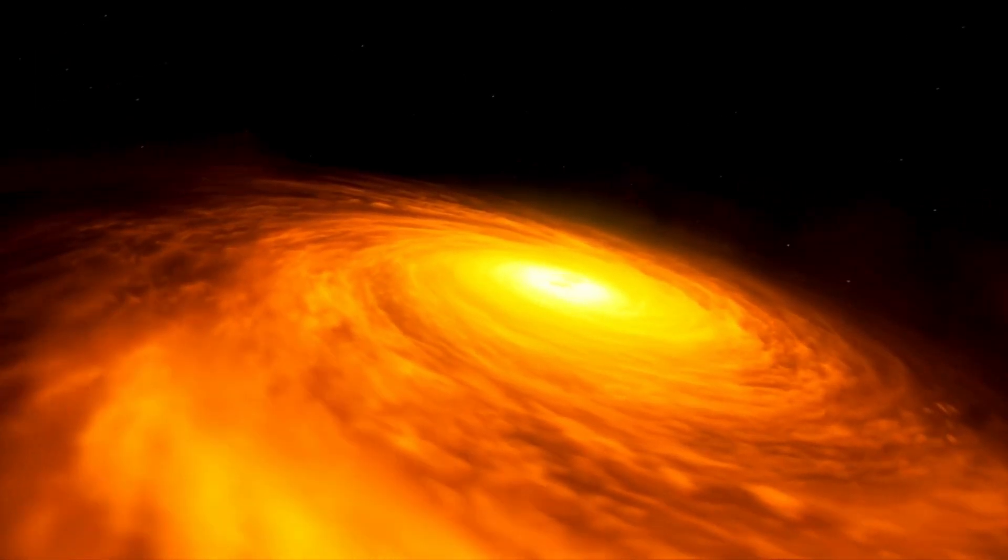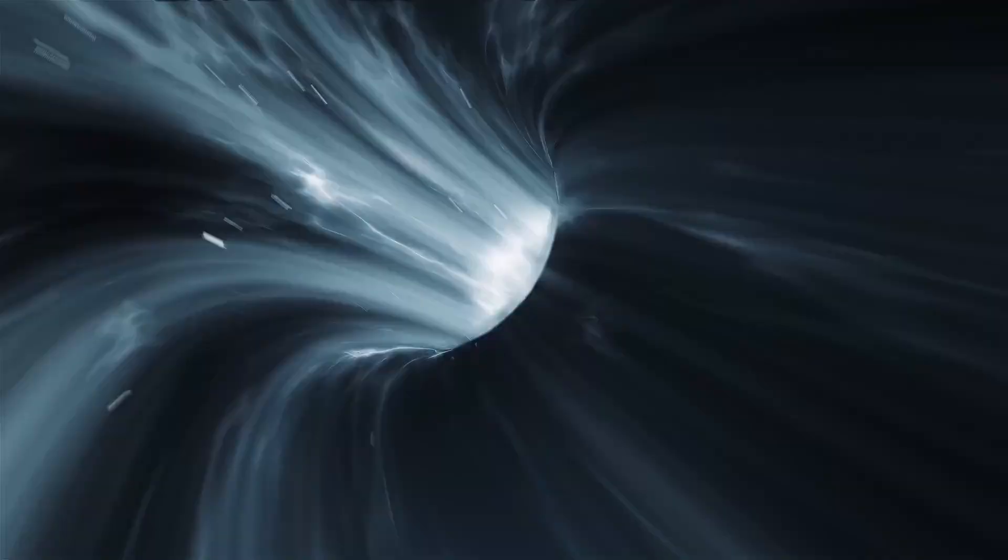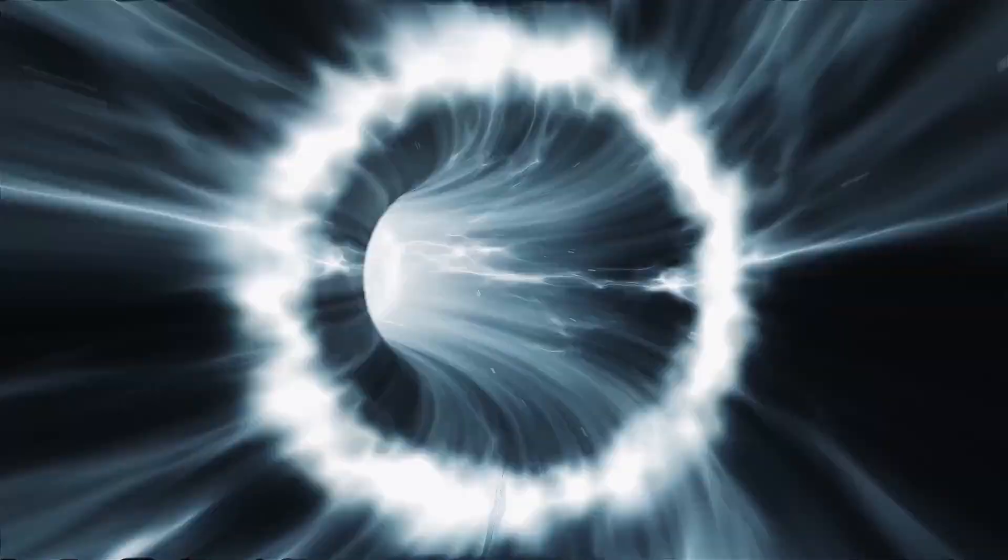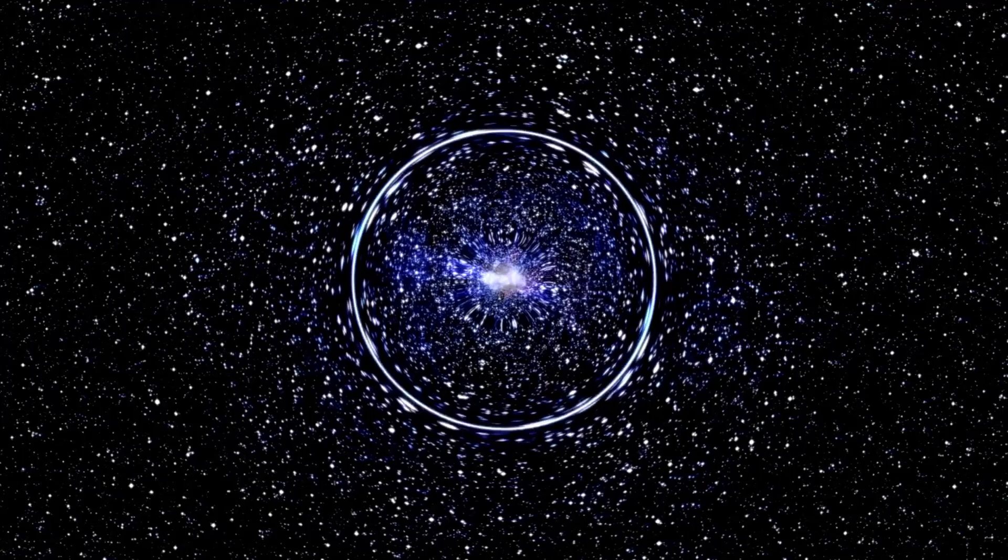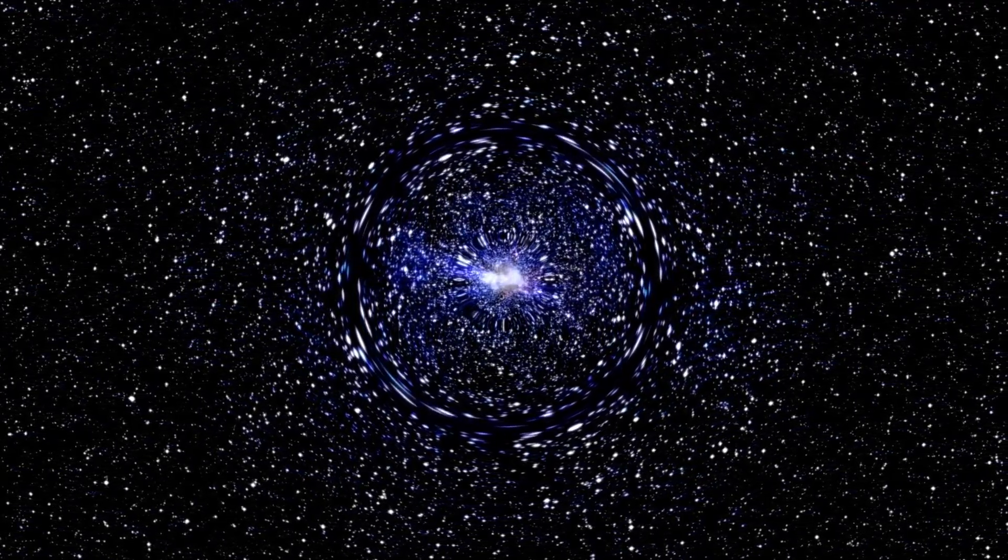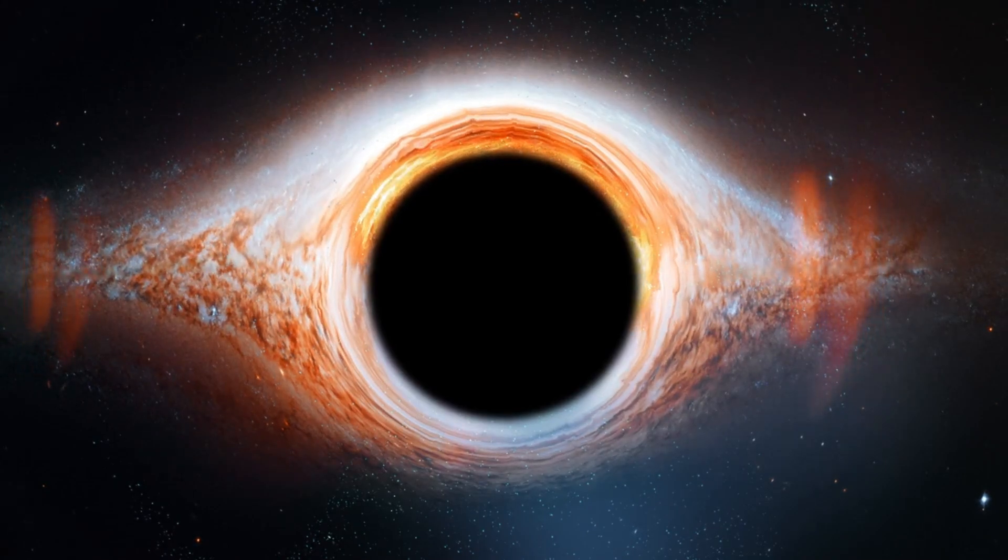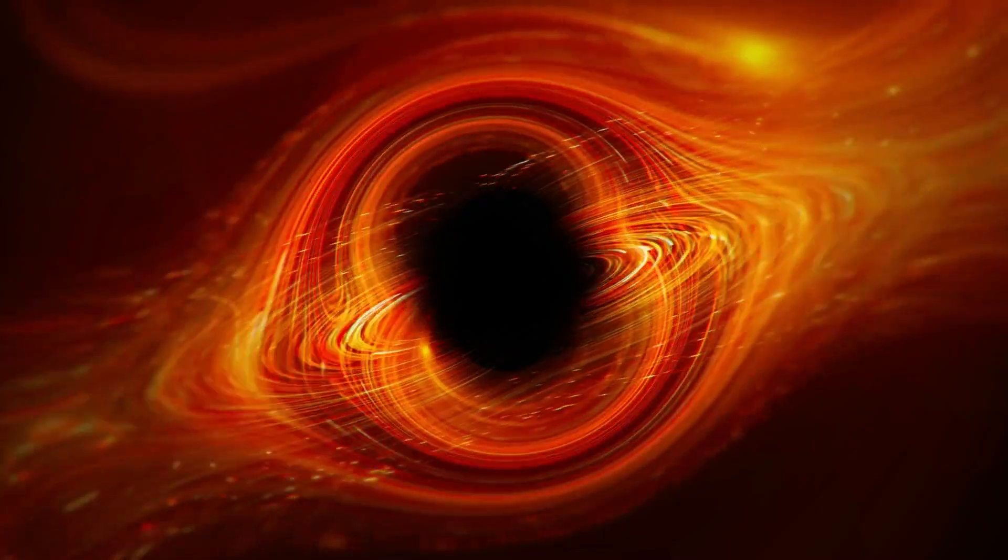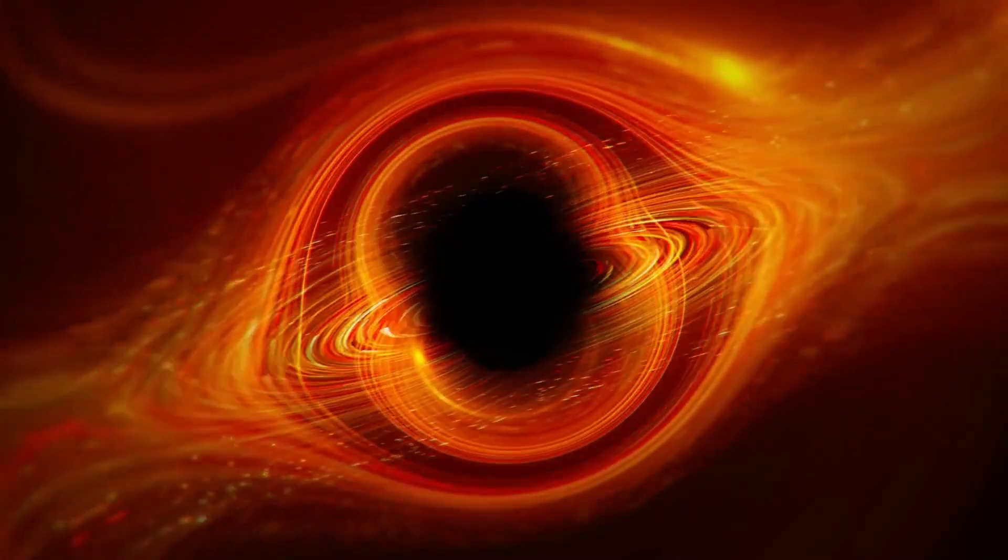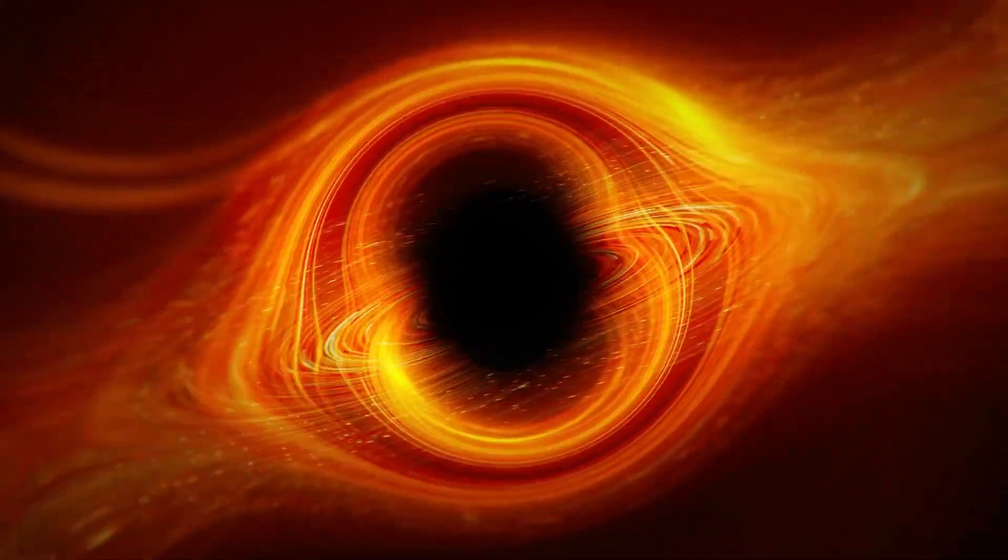What complicates matters further is that each black hole studied is unique. While they generally follow the three-layer model, their functionality can vary greatly. Unlike other objects that can be studied directly, black holes can only be examined indirectly through the radiation they emit and the surrounding gas and dust. Sending a probe like Voyager into a black hole is not feasible because anything entering the event horizon is pulled towards the singularity and compressed to an infinitesimally small point. Therefore, billions of dollars cannot be spent on probes that would be destroyed instantly.